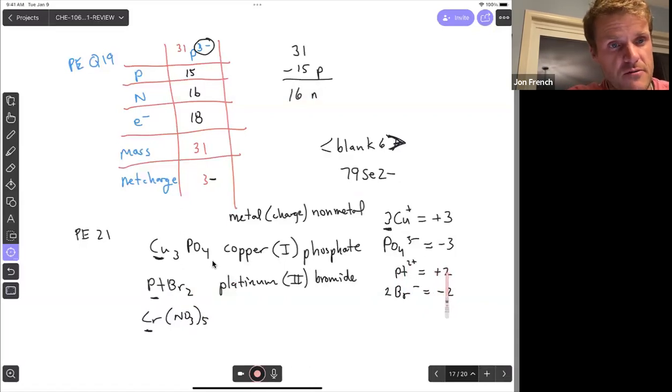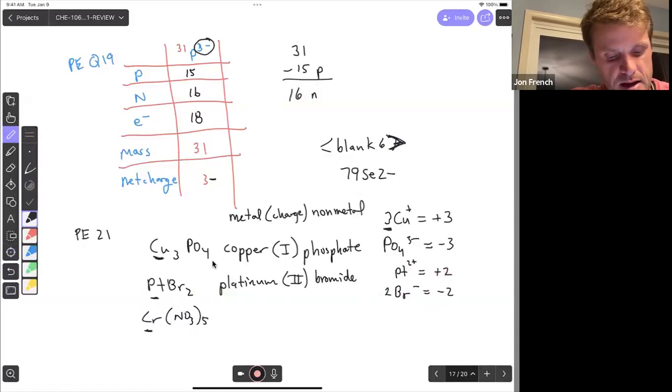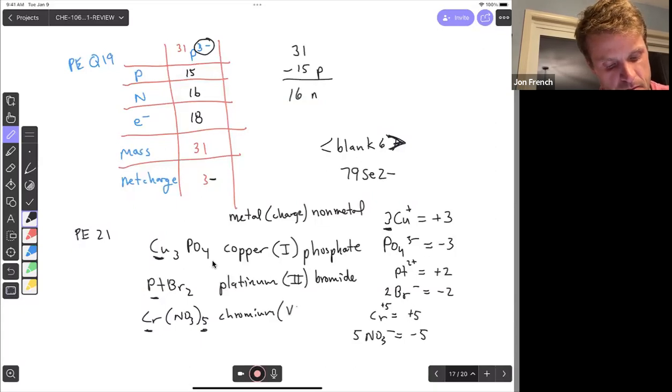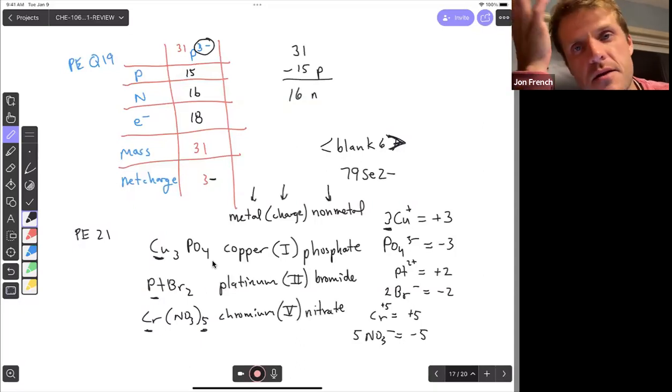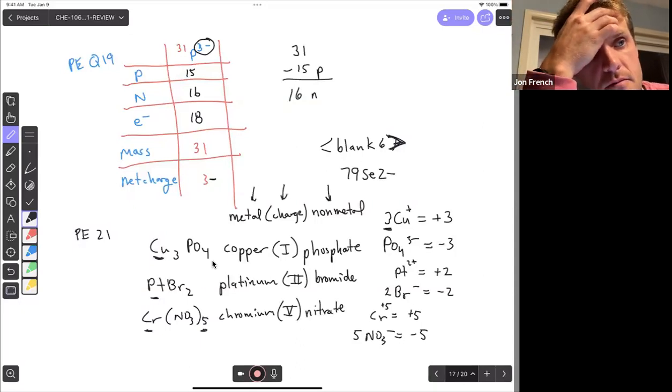Got another polyatomic up next. I've got a chromium and I've got five nitrates. So nitrate NO3 minus one. It's another polyatomic. So five times minus one, I've got a charge of minus five from the nitrate. That means chromium needs to be five plus. So we would say chromium five nitrate. Metal, the charge of that metal followed by the non-metal or the polyatomic in this case.